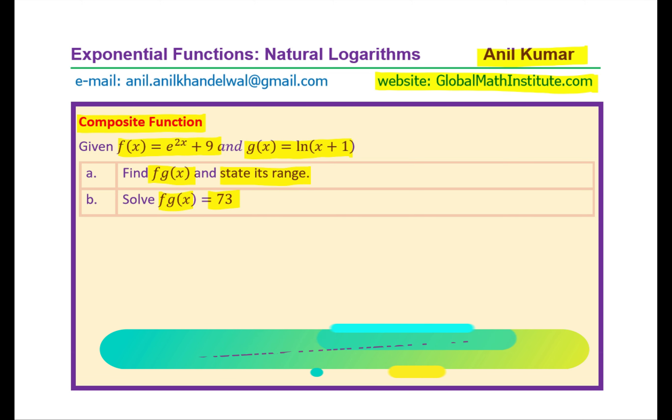We need to find f of g of x and state its range. We need to find the value of x for which f of g of x is equal to 73. You can pause the video, answer the question, and then look into my suggestions.